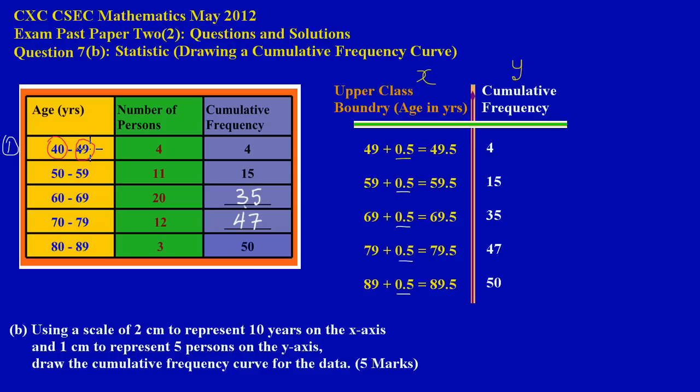Now to get our upper class boundary, what do we do? We have to add 0.5 to our upper class limit to get the boundary. Hence we say 49 plus 0.5 equals 49.5. Now let me get a little bit more specific with that as it relates to the upper class boundary. I'm going to show you how you find that or the essence behind the upper class boundary if you're not getting it.